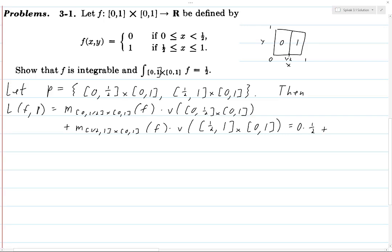Now we look at the second rectangle, and the function f - the only value it takes on that rectangle is 1, and so the infimum has to also be 1. The volume was one half, and so we add these together and we get one half.